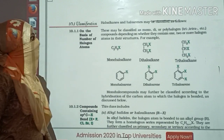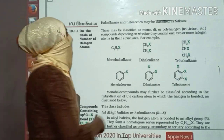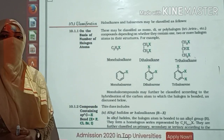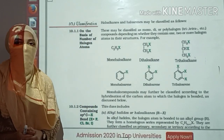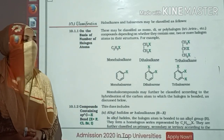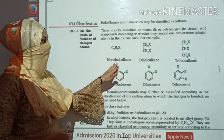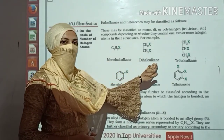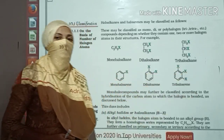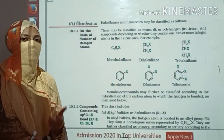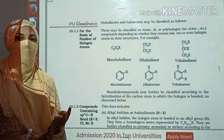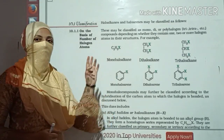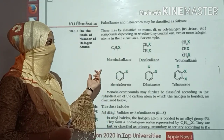Next is your classification. In the classification, depending on the number of halogens, we write the compound names. For example: mono-haloalkane, di-haloalkane, tri-haloalkane. Mono means 1, di means 2, tri means 3, tetra means 4. Depending on the number of your X, you write their names.